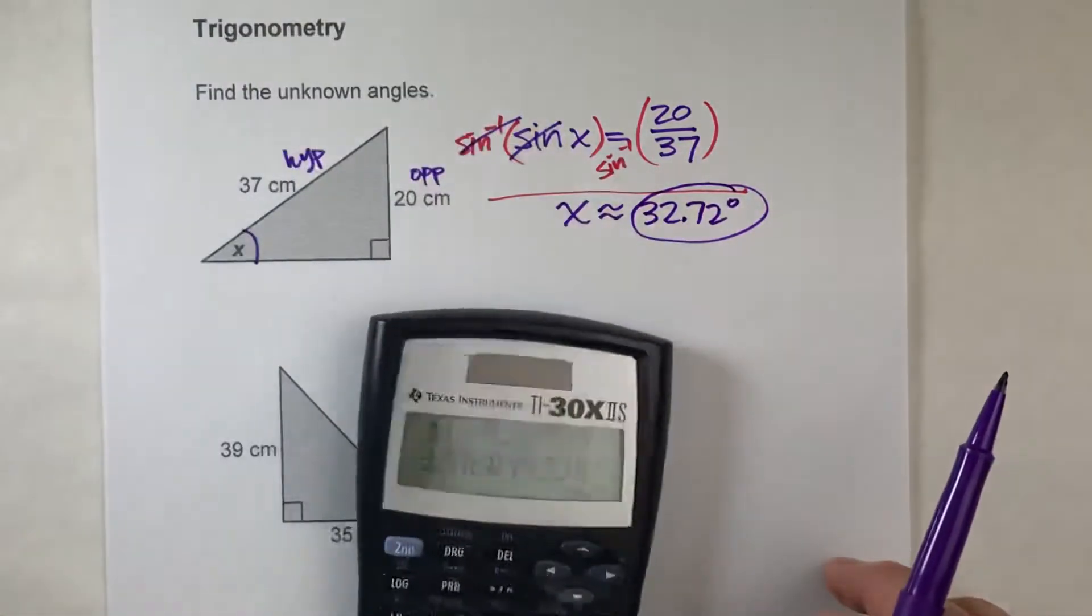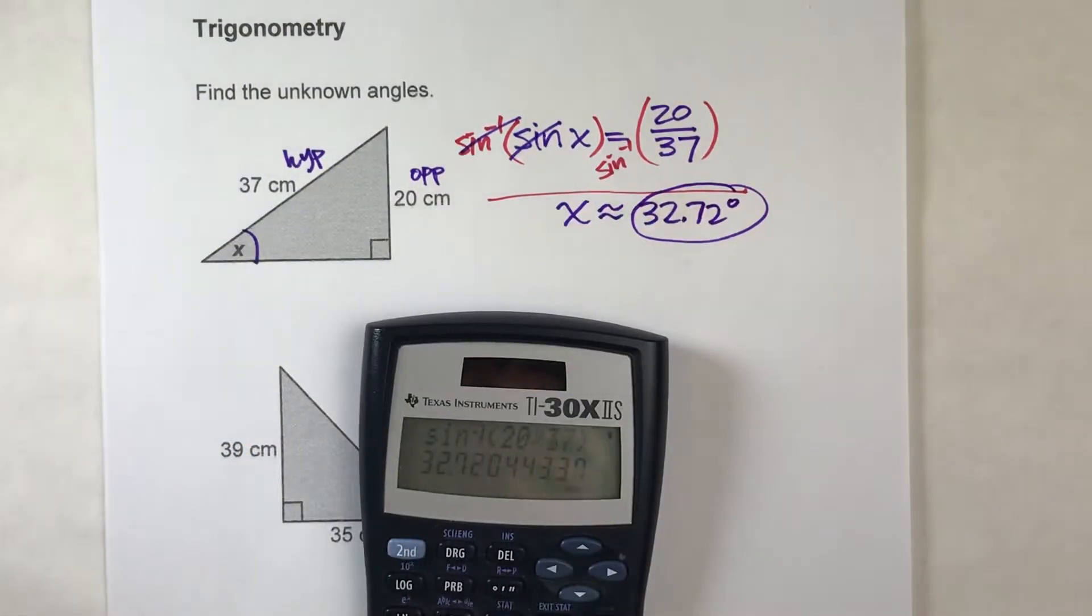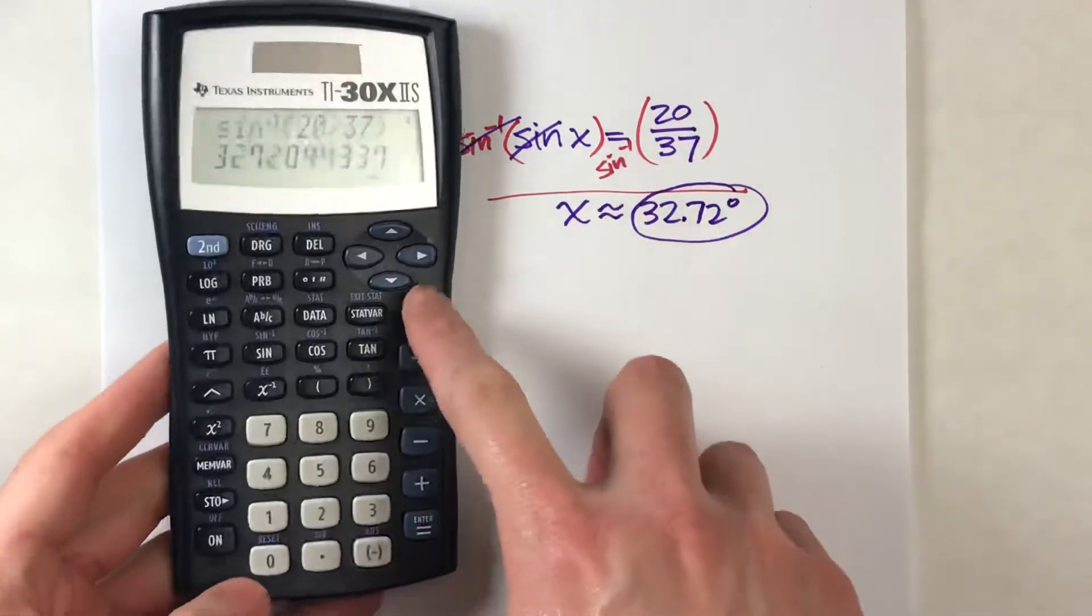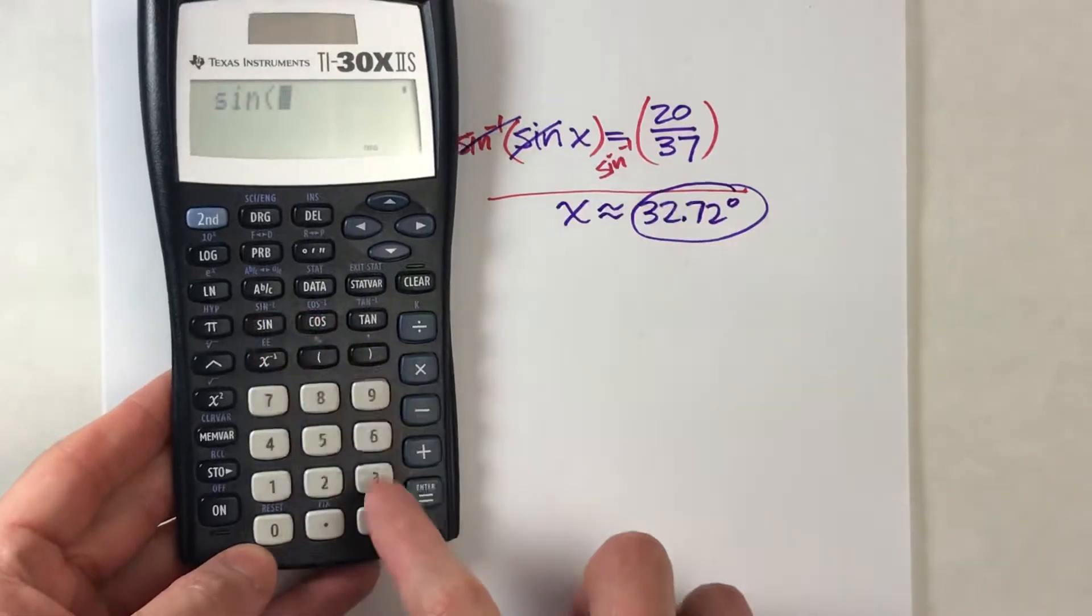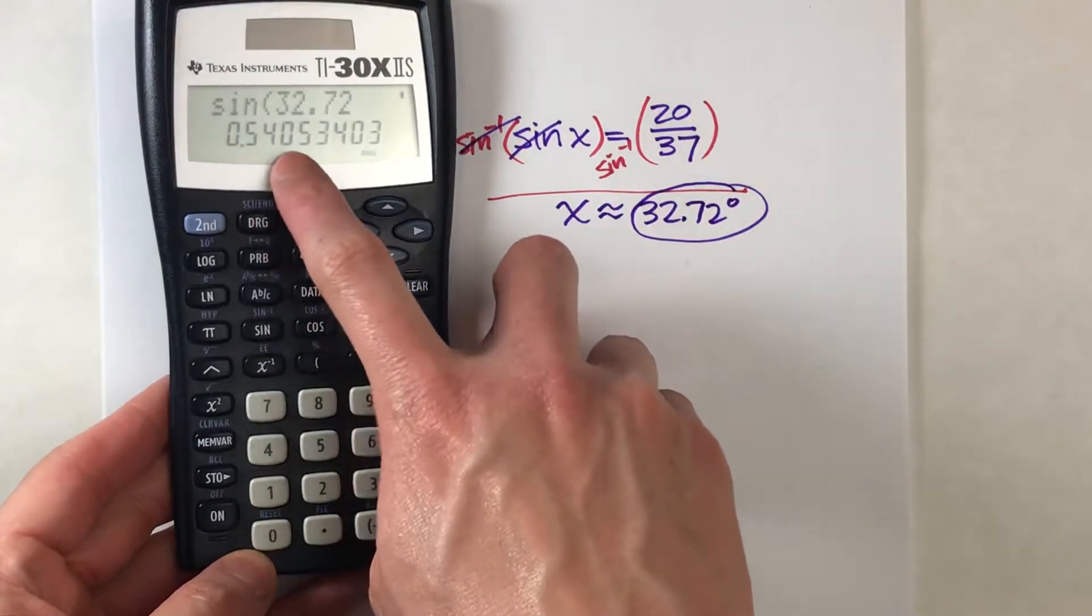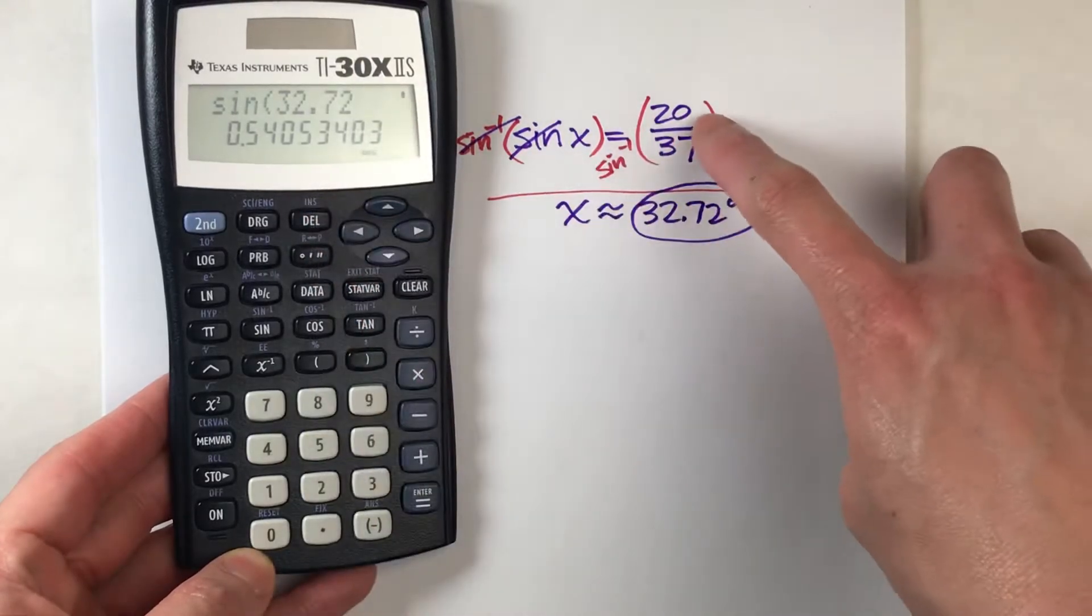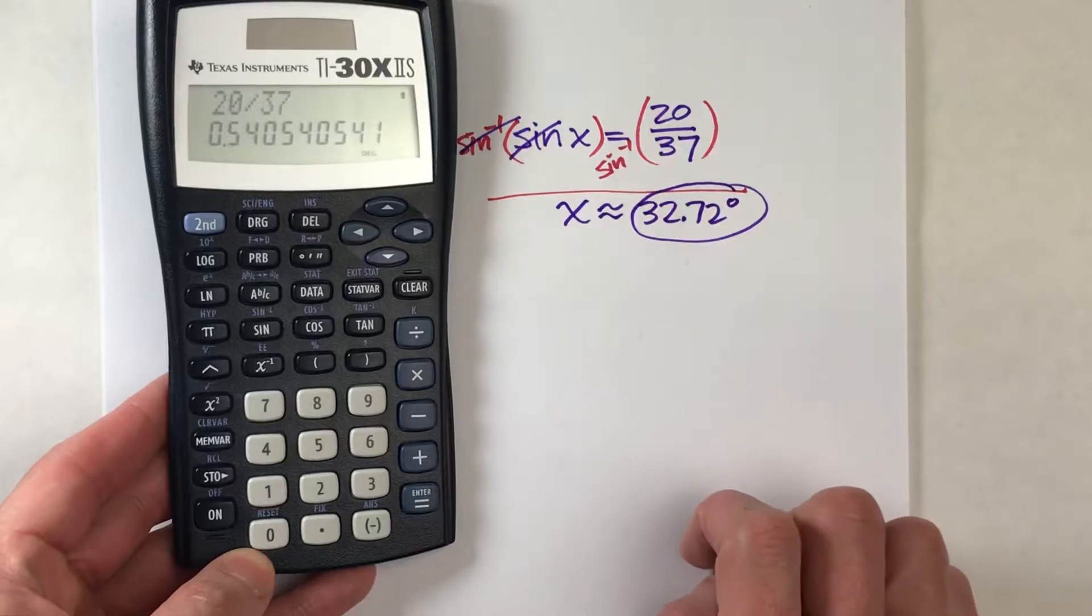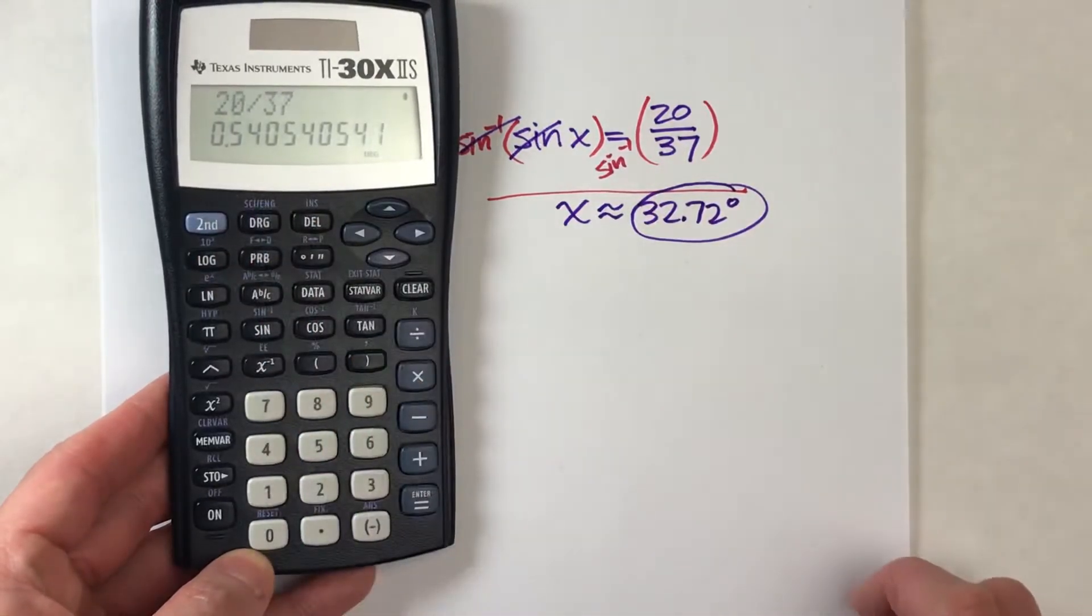And that's my answer. That angle there is about 32.72 degrees. And if you're not sure and you don't believe me, well, you can always just test it out. Sine of 32.72 degrees is 0.5405. Well, is 20 divided by 37, 0.5405? Yes, it is.